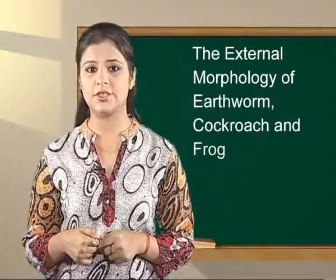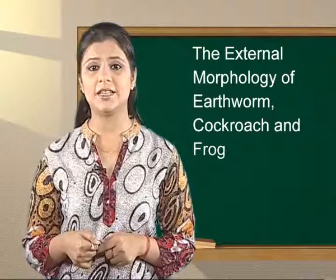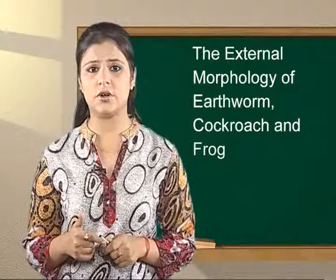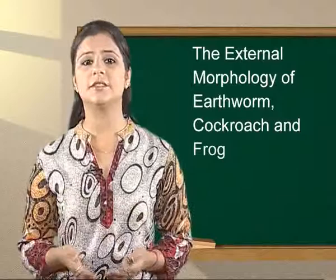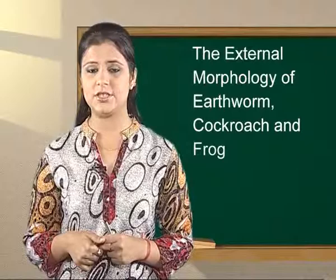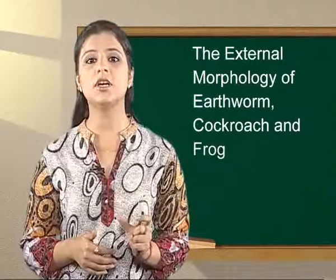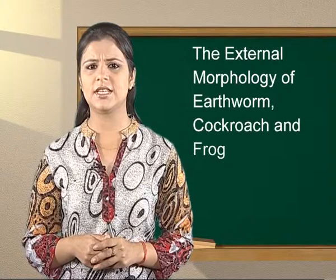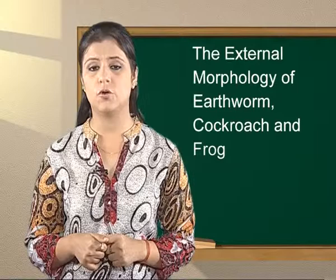Where is Periplaneta americana found? Periplaneta americana is found in dark and damp places; they are generally seen in kitchens, restaurants and underground drains. How do male and female cockroaches differ? Male cockroaches have an additional set of appendages called anal styles on their abdomens — this is the easiest way to distinguish male from female. The female cockroach has a short, broad abdomen with no anal styles. How do cockroaches spread infection? Cockroaches crawl through dirty areas and then walk around our homes, tracking in lots of bacteria and germs.